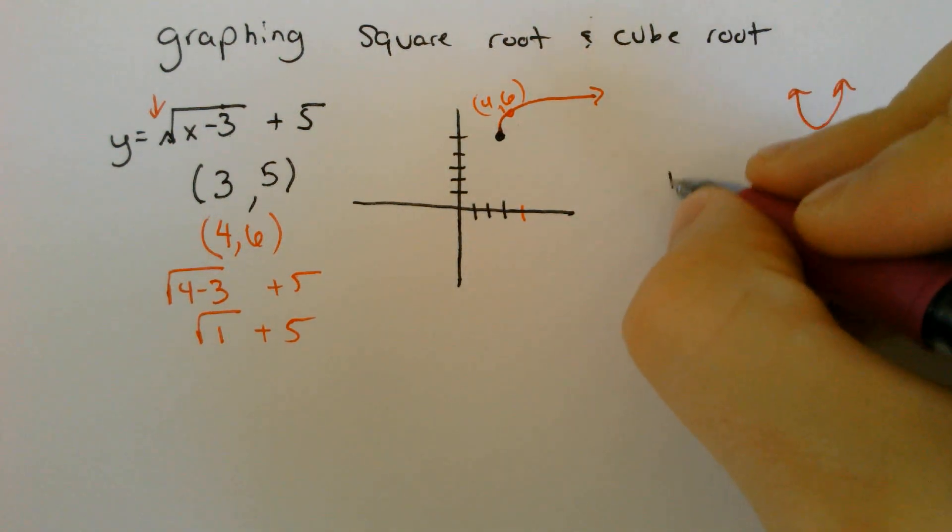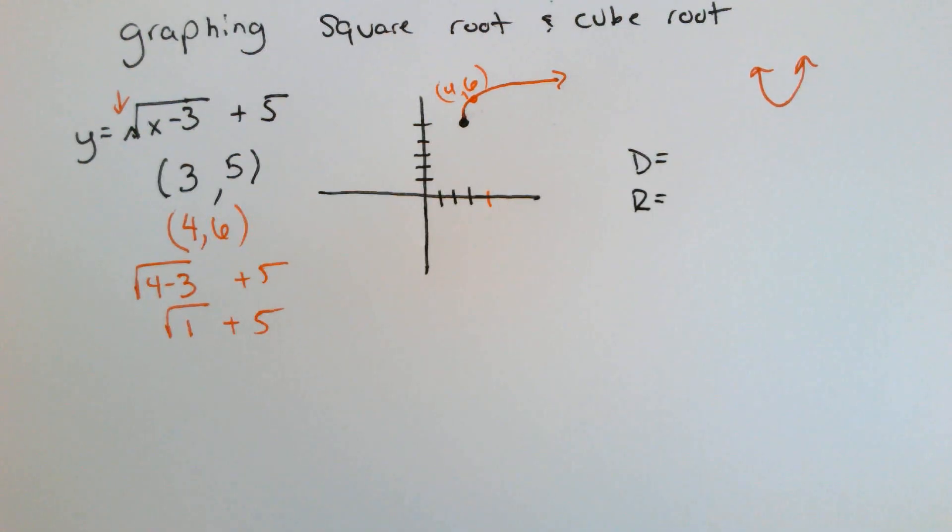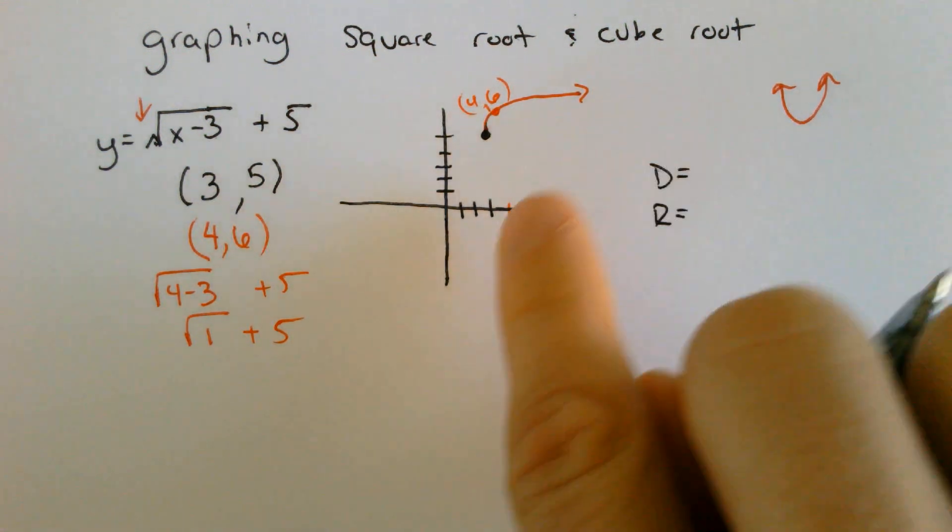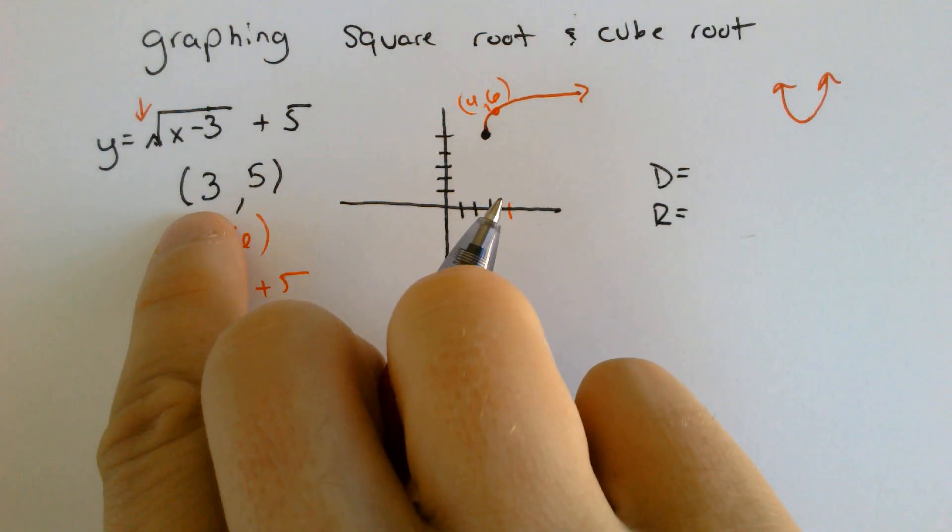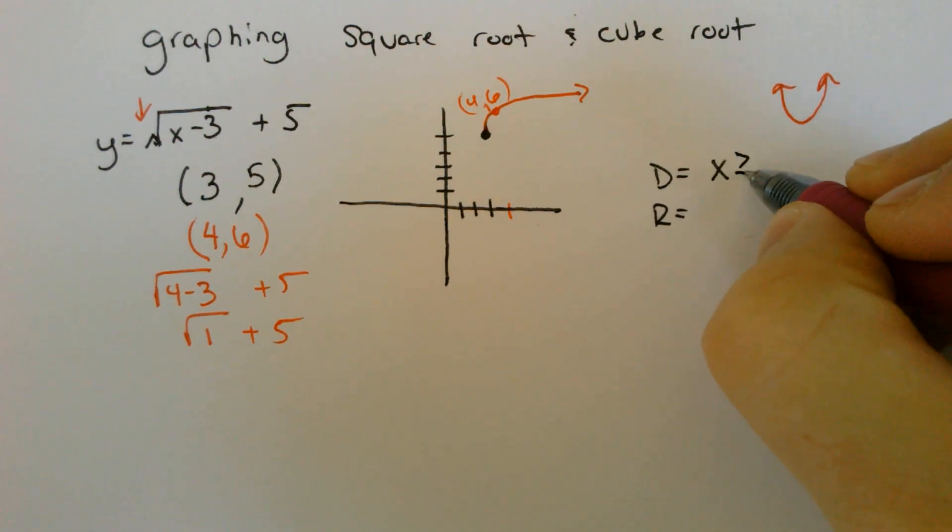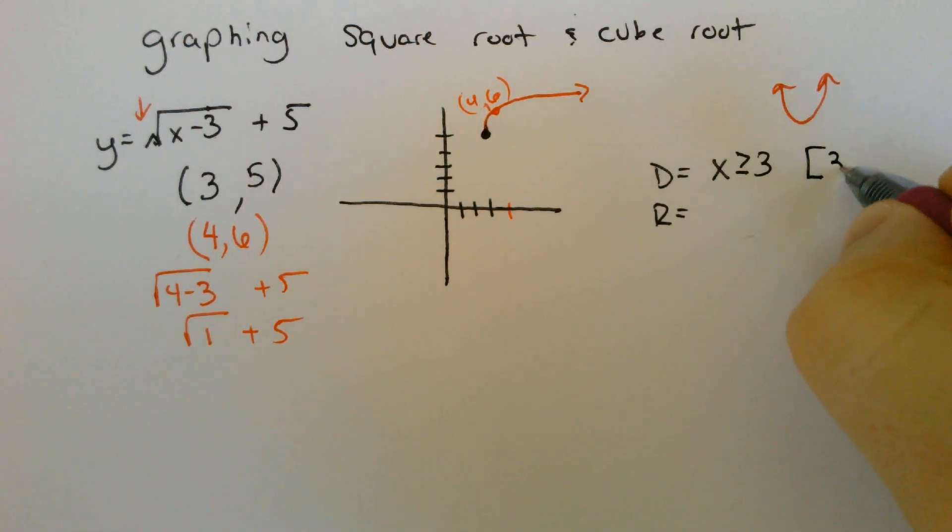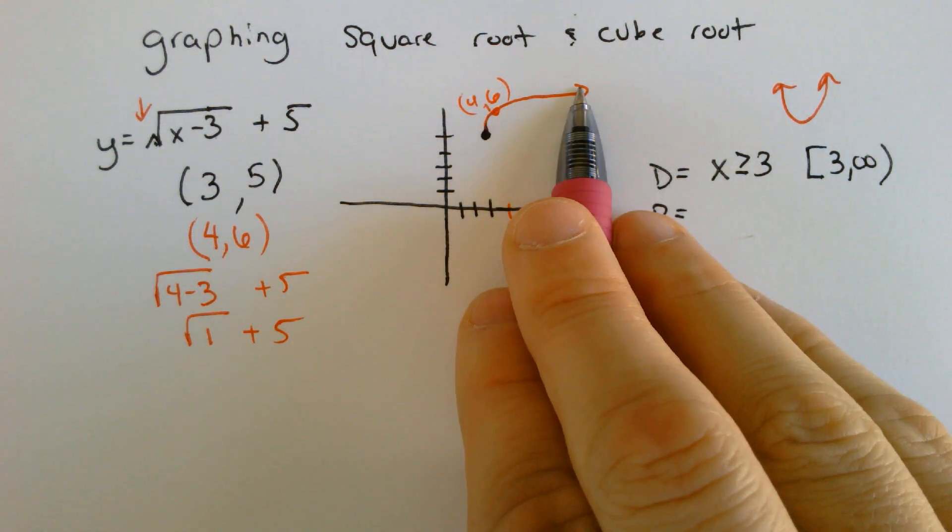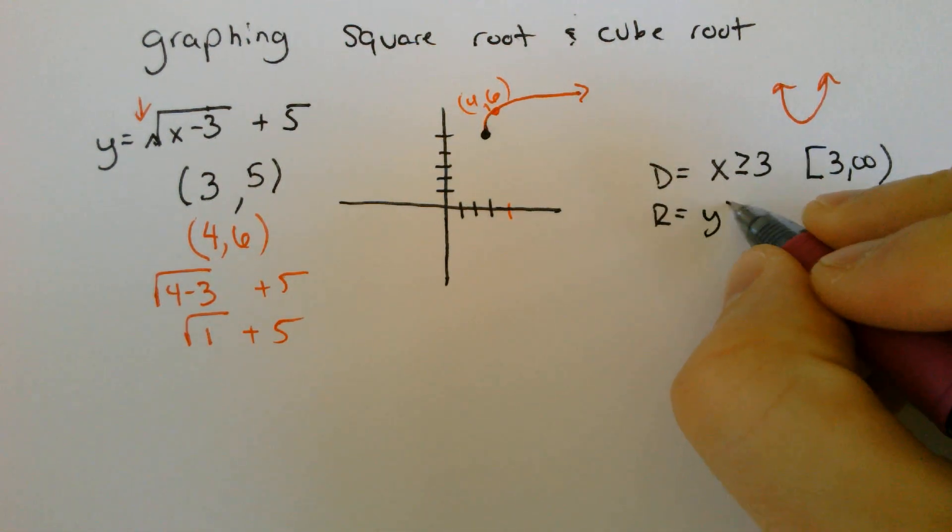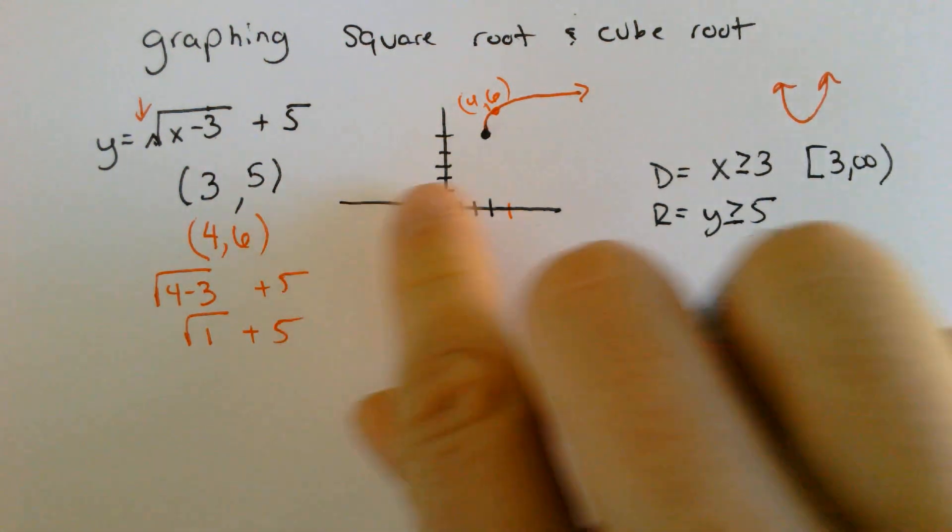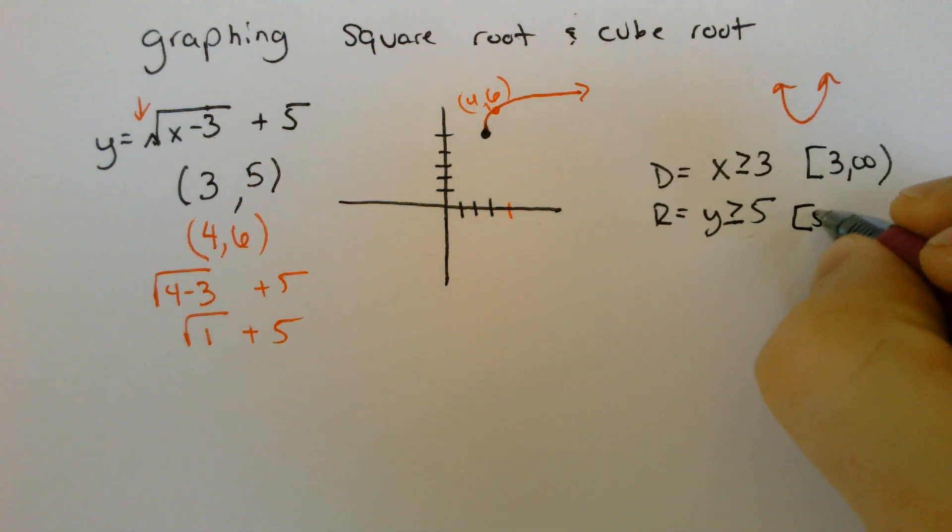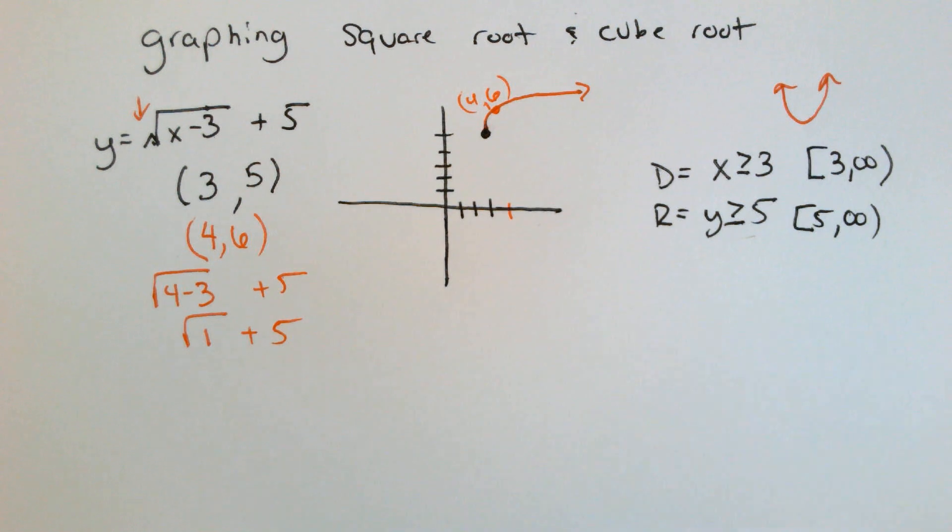What I do require is the domain and the range. The domain is going to the right from this x value of the vertex, which was 3. So the domain is x is greater than or equal to 3. You could also say from 3 to positive infinity. The range is also a tricky point because the range is going up in this case. So the range is y is greater than or equal to 5 because it's going up from the 5, and it would be 5 comma infinity.